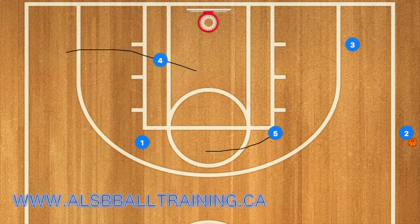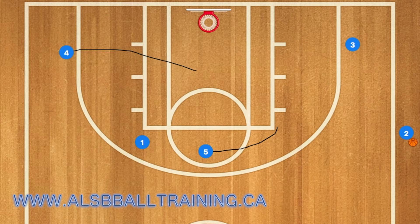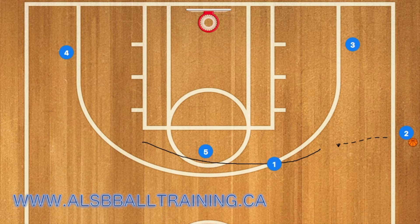Next, four will use five as a screen and cut towards the rim. Four may be open for a shot as well. If not, four will clear out to the left side and five will screen for player one.